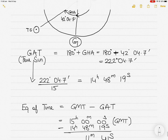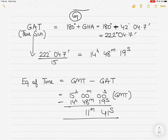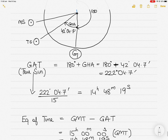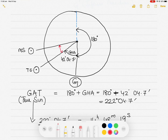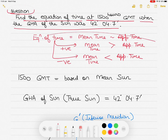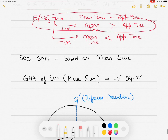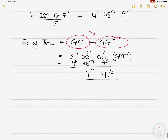Now we have to see which one is larger. Greenwich Mean Time at 1500 hours means the mean sun is ahead; the true sun was at 14 hours 48 minutes 19 seconds, so it is behind the mean sun. Because GMT is greater than GAT — 1500 hours is more than 14 hours 48 minutes 19 seconds — the equation of time is positive.